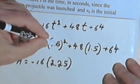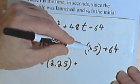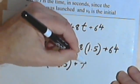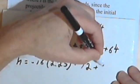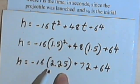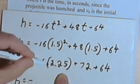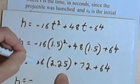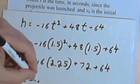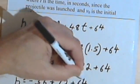So this is going to be negative 16 times 1.5 times 1.5 is 2.25, because 15 squared is 225. And 48 times 1.5, so half of 48 is 24, 48 plus 24 is 72. Plus 64. And now I need 2.25 times negative 16. I know that's going to be negative. 2 times 16 is 32. And 0.25 of 16 is 4. So 32 and 4 is 36. So that's negative 36 plus 72 plus 64.